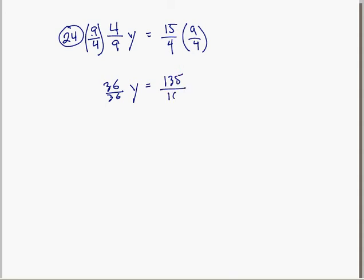Something divided by itself is 1, so this becomes 1 times y equals 135 over 16. And of course, multiplying by 1 results in just the thing itself. So we have y is equal to 135 over 16.